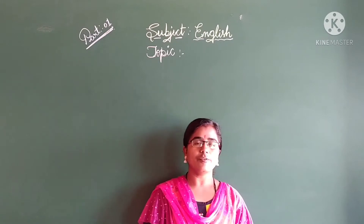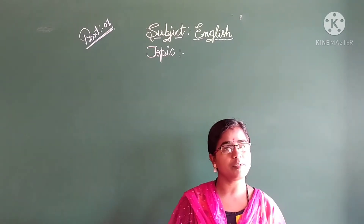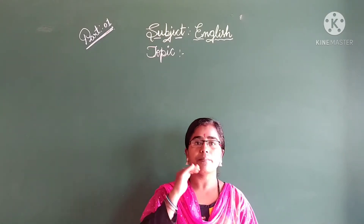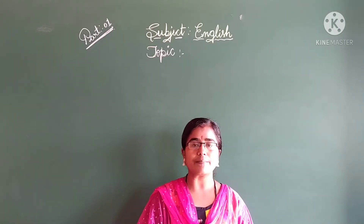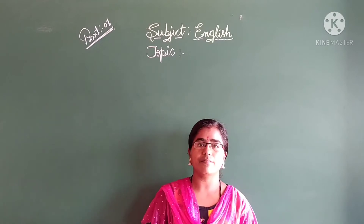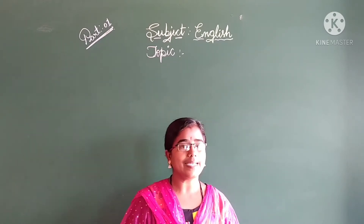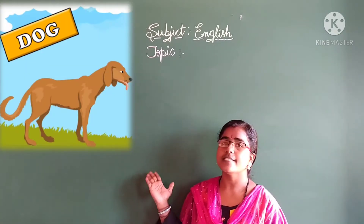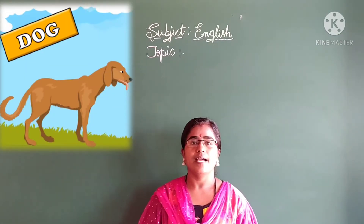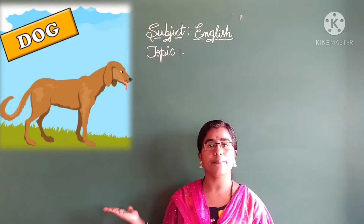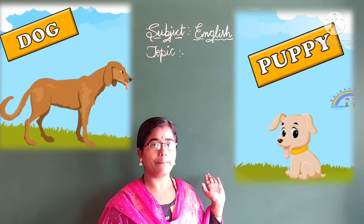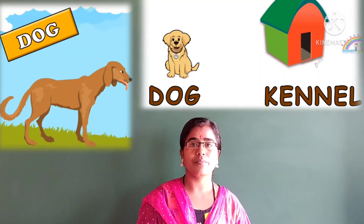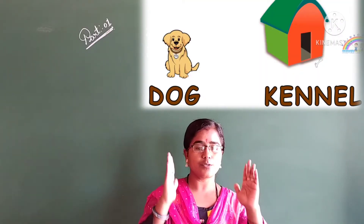Before that children, you already know so many animals and birds, their babies, and where they live. Let us see how much you know. Which animal is this? Dog. The baby of the dog - what do we call it? Puppy. Where does the dog live? The house of the dog we call a kennel.